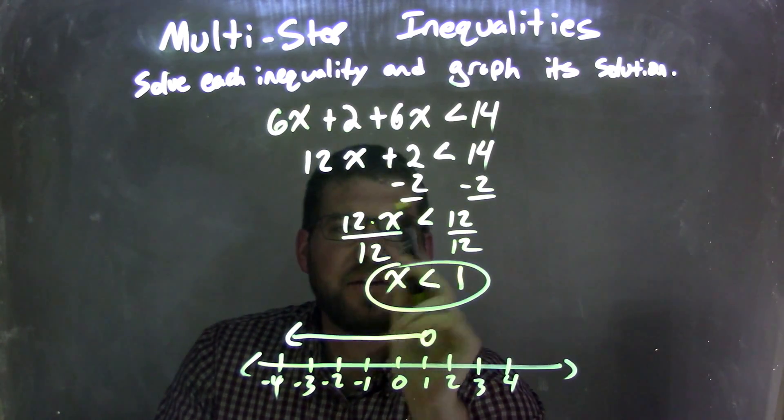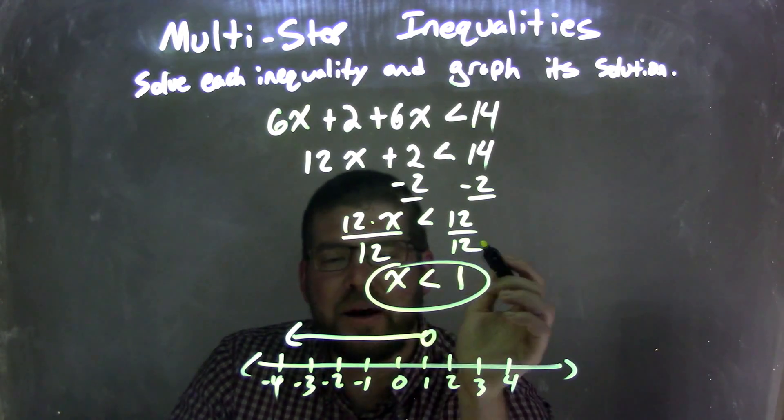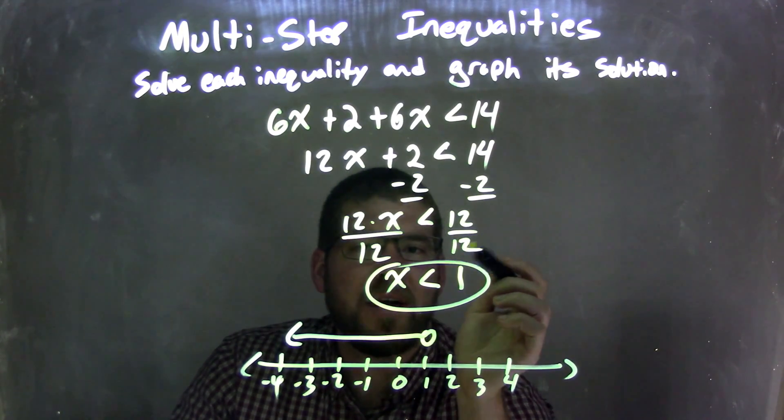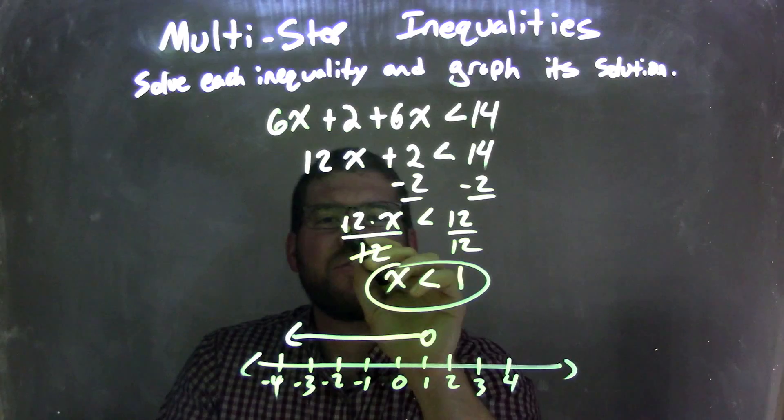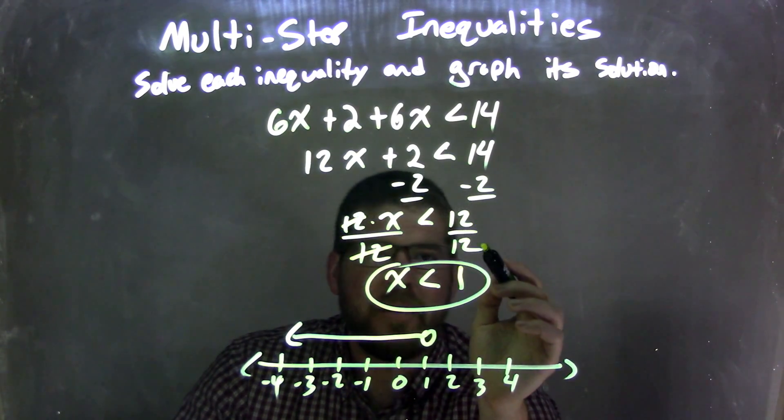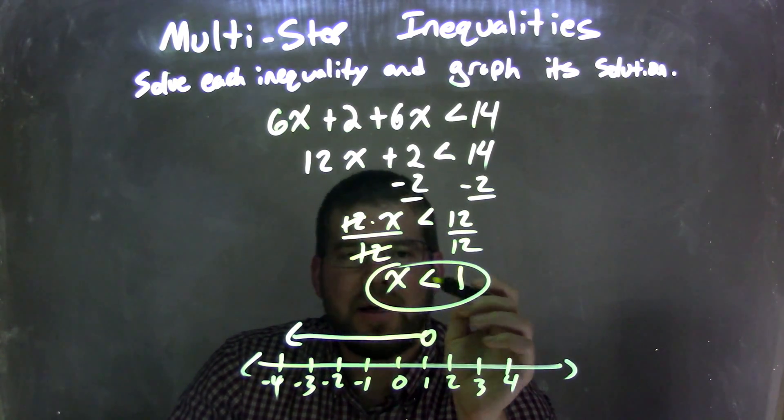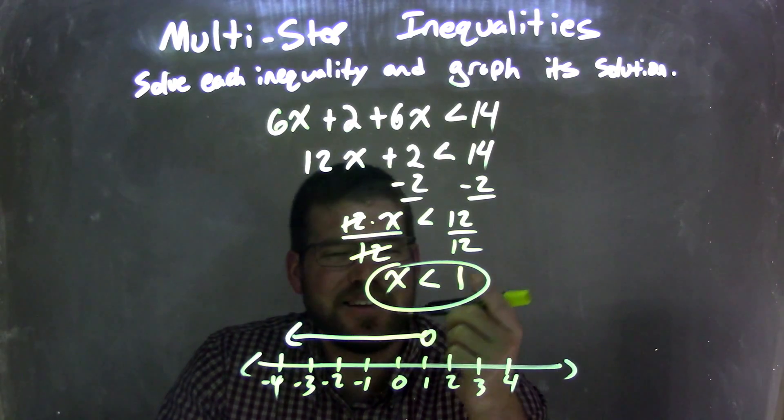Since there's multiplication going on for 12x, I divide it by 12, opposite of that, to both sides, leaving me x by itself on the left, and 12 divided by 12 being 1 on the right, and the less than sign in between. So we have x is less than 1.